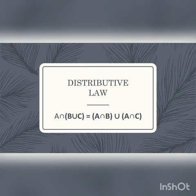Distributive law: A intersection (B union C) is equal to (A intersection B) union (A intersection C).